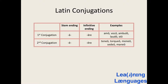For the first conjugation we have: amo, meaning I like or I love; voco, I call or I summon; ambulo, I walk; laudo, I praise; and sto, I stand or I stay.